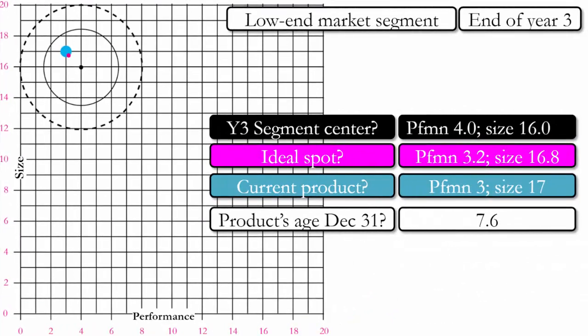At the end of year three, our product is now trailing the ideal spot but is still close to it and still within the fine cut. Its age is very close to the ideal age of seven. It still doesn't seem to be the right decision to do a revision now.